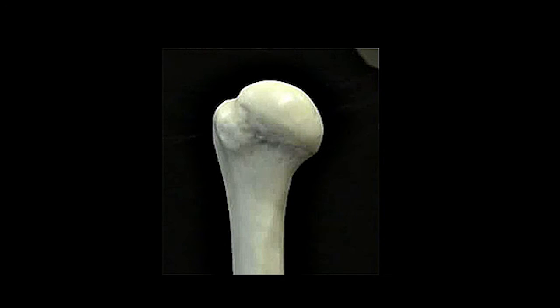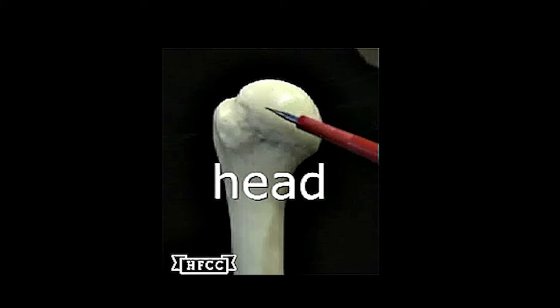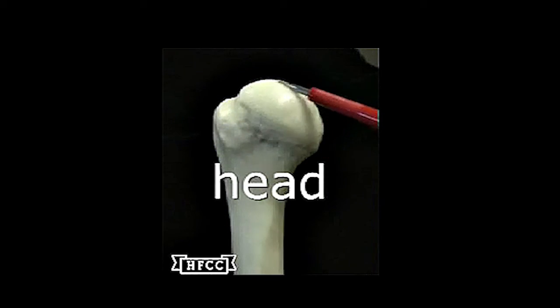Now to turn this humerus around and to take a look at the posterior view on the proximal end, the part that articulates with the scapula. Here's the head again. This articulates with the glenoid cavity, or glenoid fossa, of the scapula.